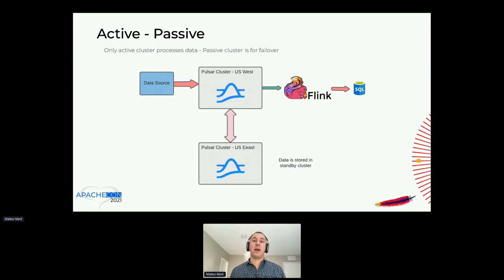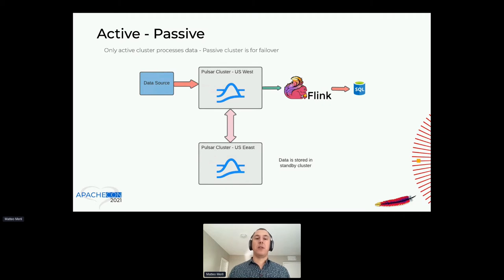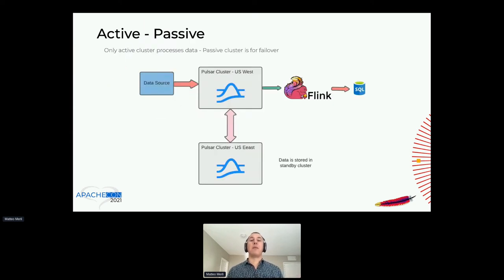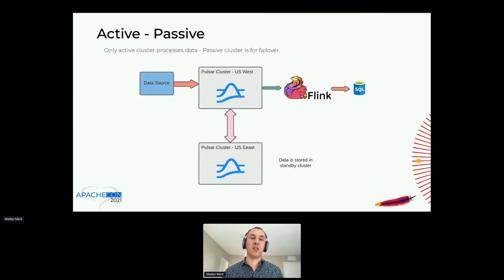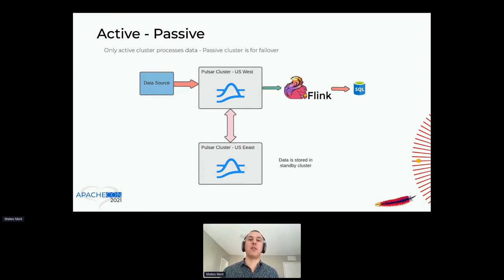The alternative is active-passive: you write data into one Pulsar cluster, do processing, write results to a database, and also replicate the data to a different Pulsar cluster for disaster recovery. So if US West completely goes down, you don't lose all your data. But you're not doing processing in the passive cluster. For failover, you need to spin up a new processing cluster in US East and switch sources there. This avoids paying double processing costs, but the cluster failover operation is more involved.